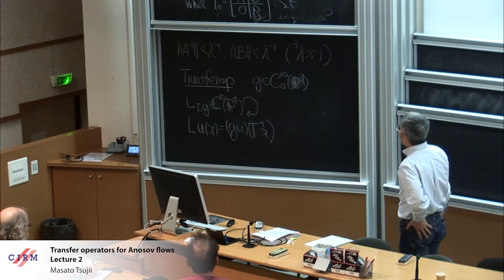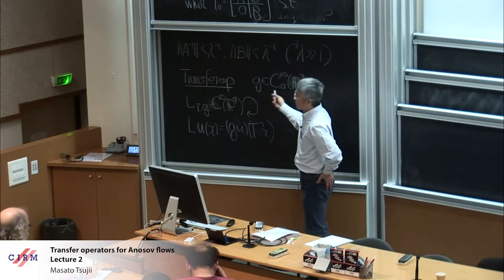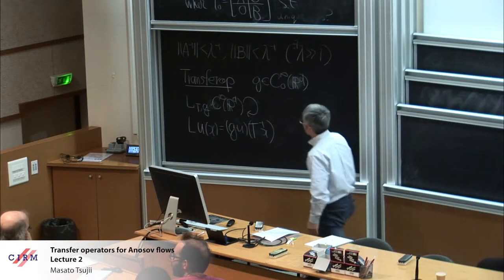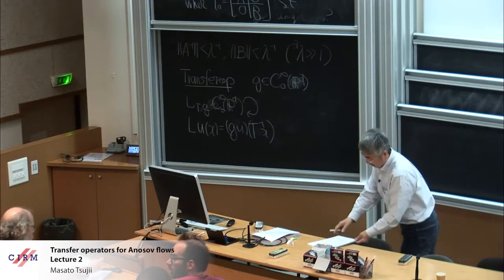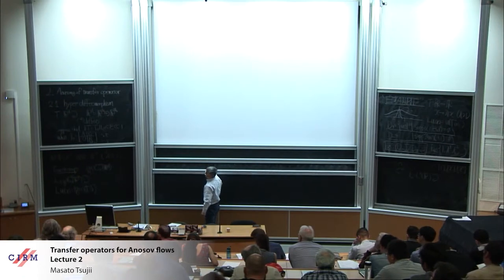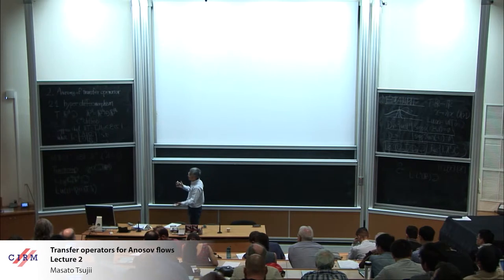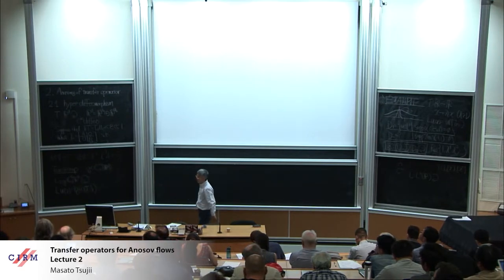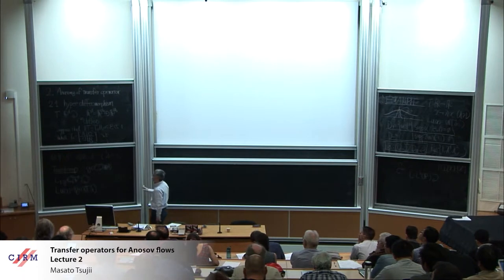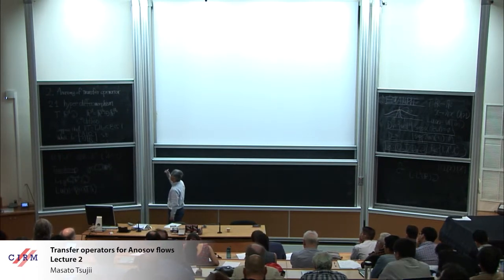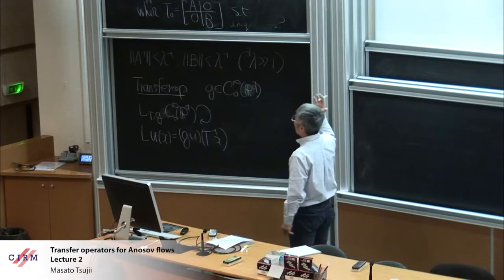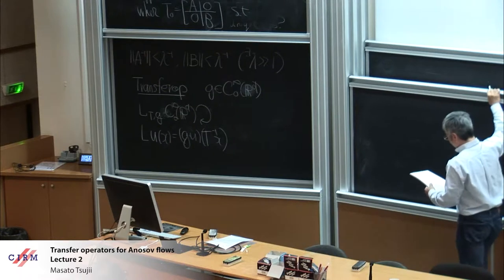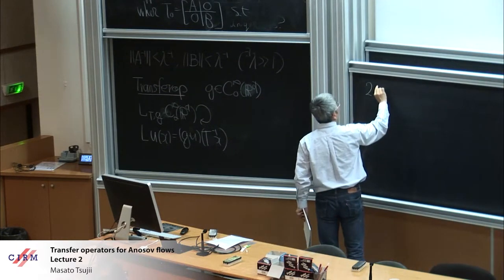We consider the transfer operator for this. For g in C∞ with compact support, we consider L_T g: C∞(R^d) → C∞(R^d), defined as before: |det T'| composed with T⁻¹ times x. It is rather trivial that if you have a transfer operator on a manifold for an Anosov diffeomorphism, by setting up small local charts and a partition of unity, we can get this kind of transfer operator. So the transfer operator for Anosov diffeomorphisms can be decomposed into transfer operators like this.